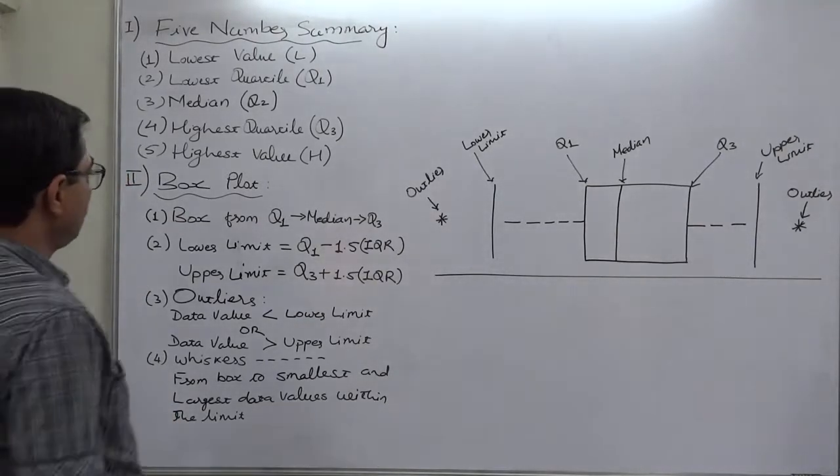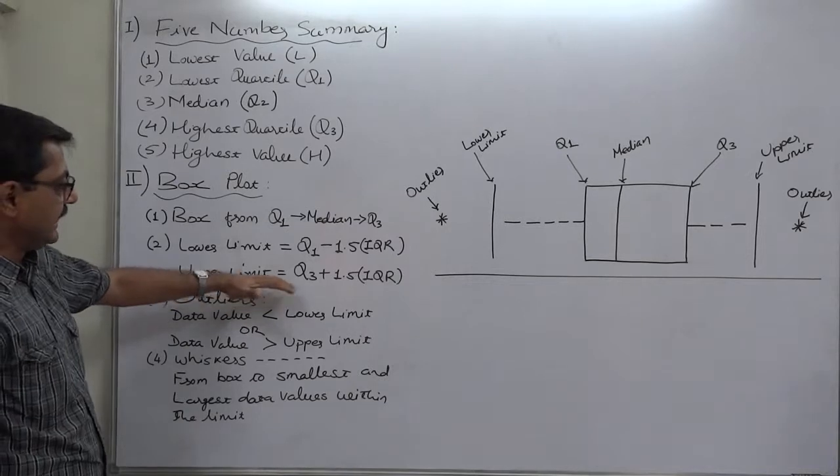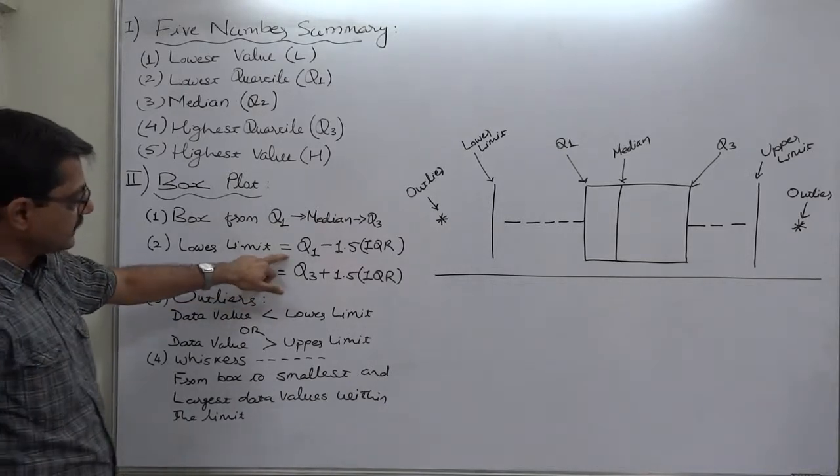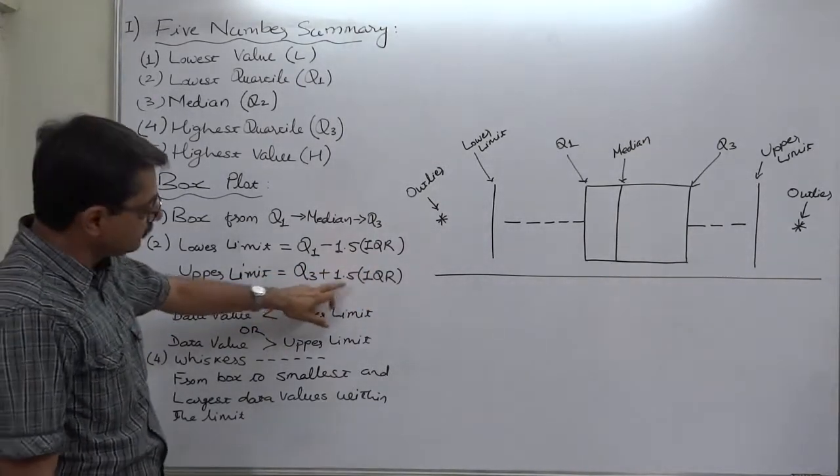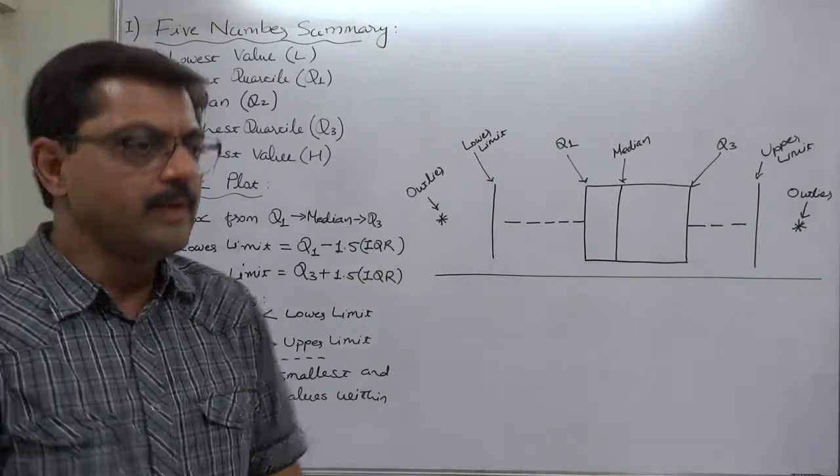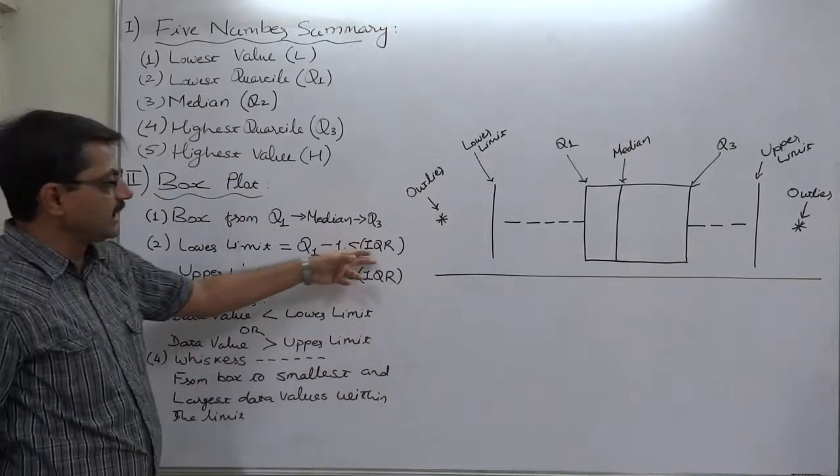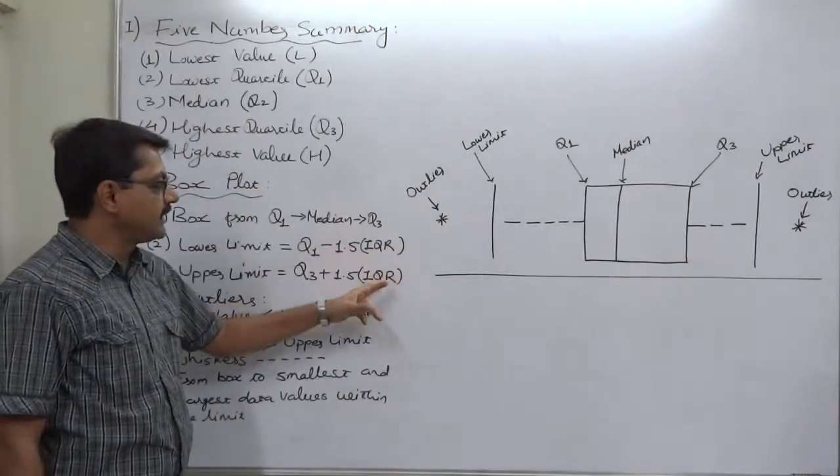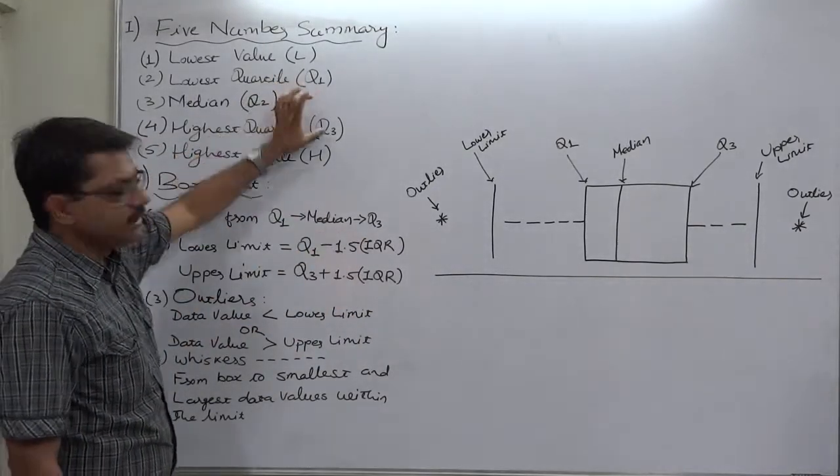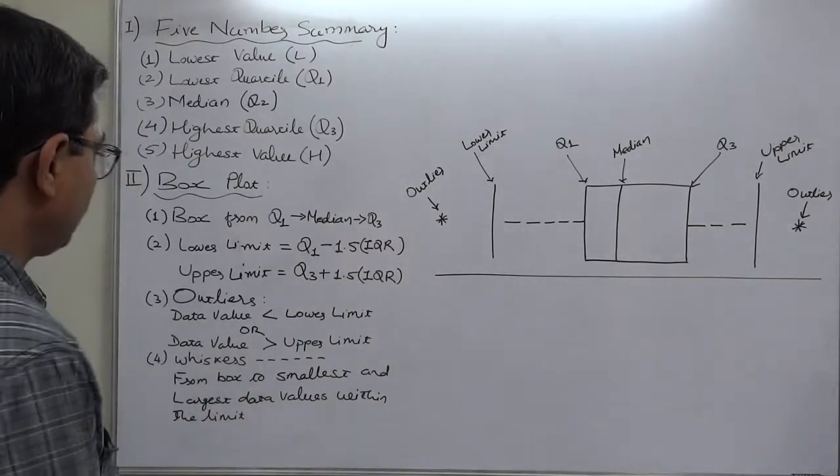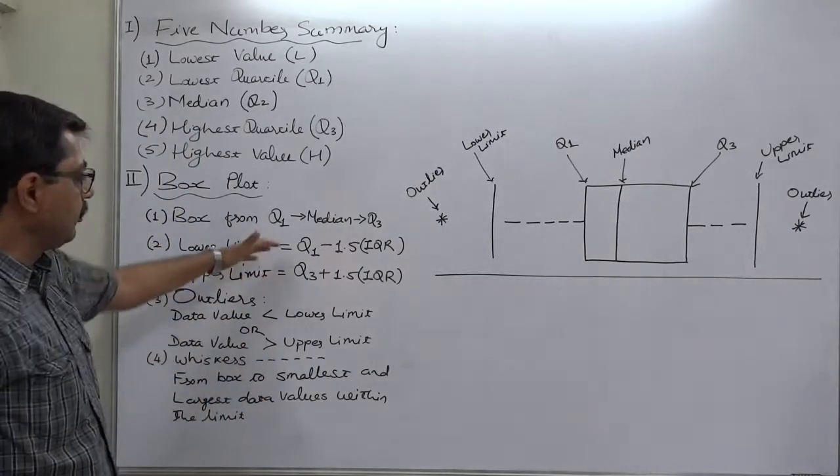To prepare the box plot chart, first of all, we have to calculate lower limit and upper limit. In this case, the lower limit is first quartile minus 1.5 IQR and the upper limit is third quartile plus 1.5 IQR. So, first of all, before proceeding to draw the box plot, we have to calculate IQR and lower limit and upper limit. To calculate IQR, we can have Q1 and Q3 out of the five-number summary. So, with the help of these two, we can easily calculate lower limit and upper limit.